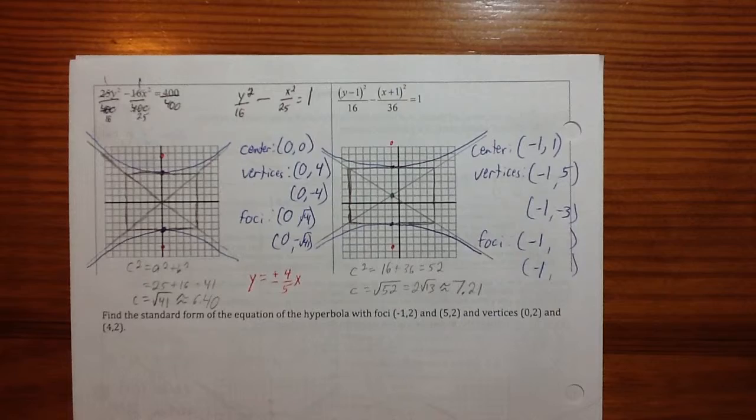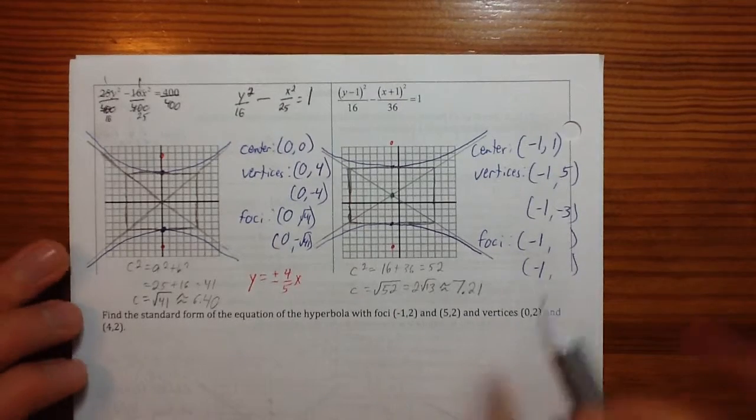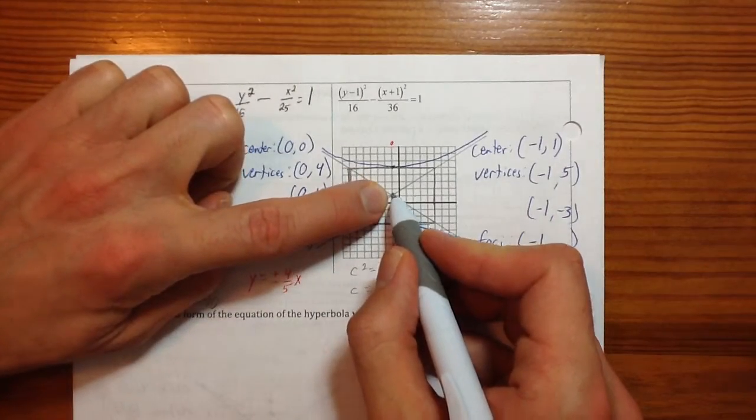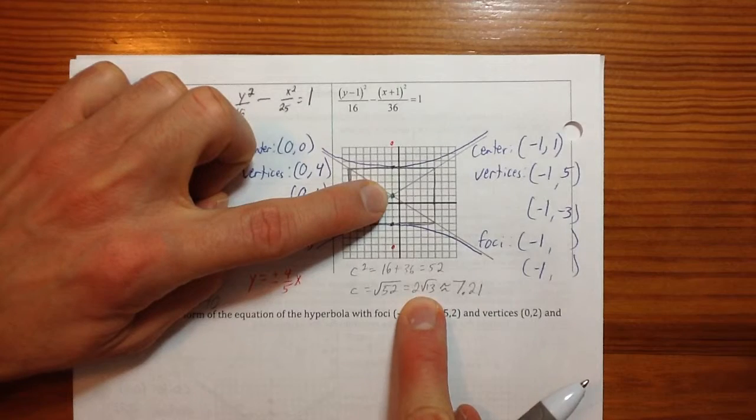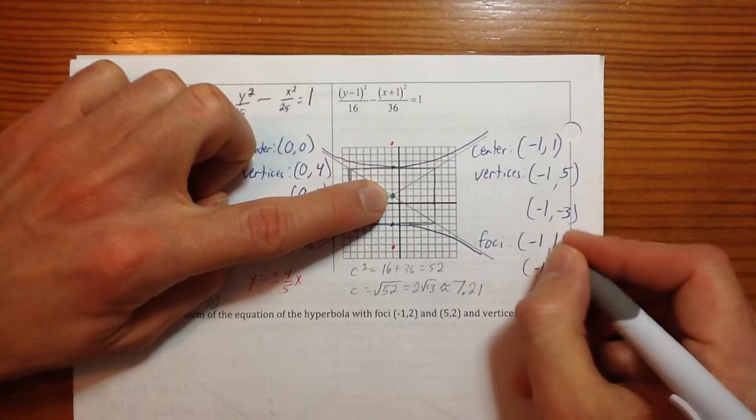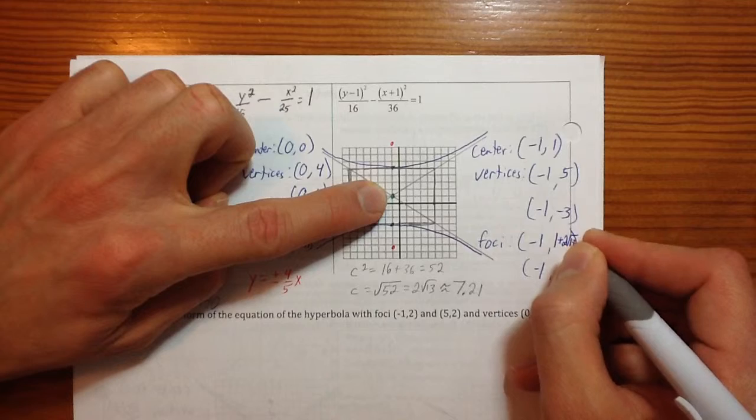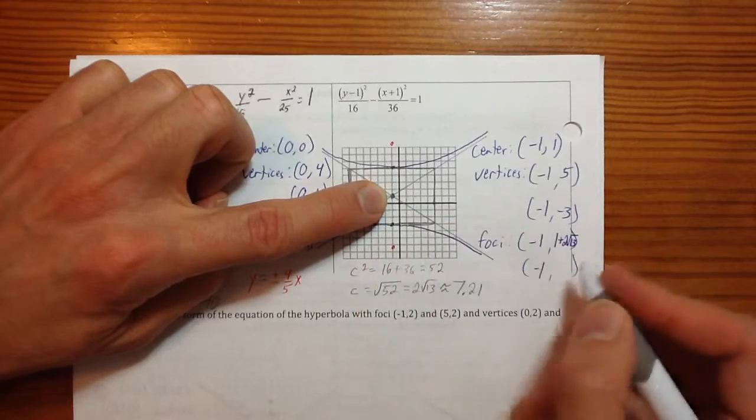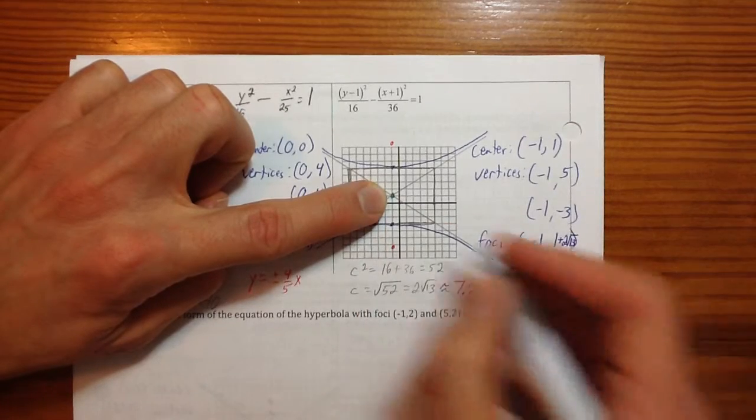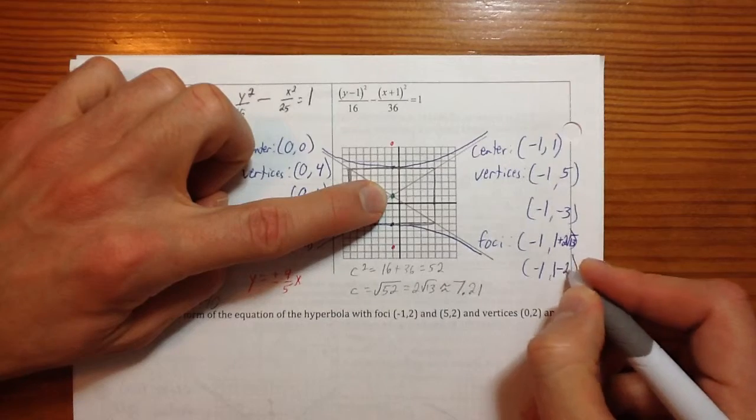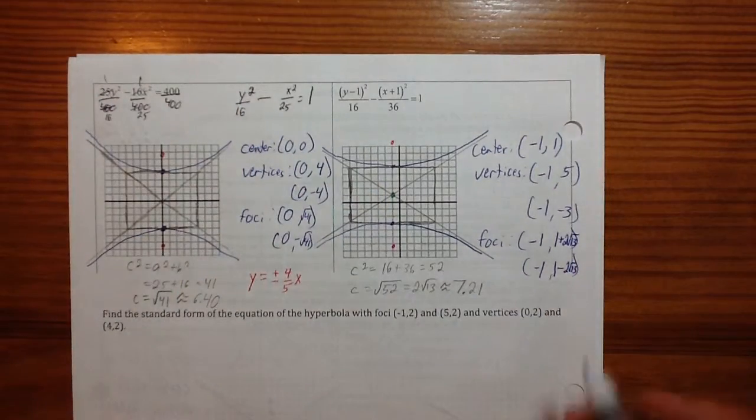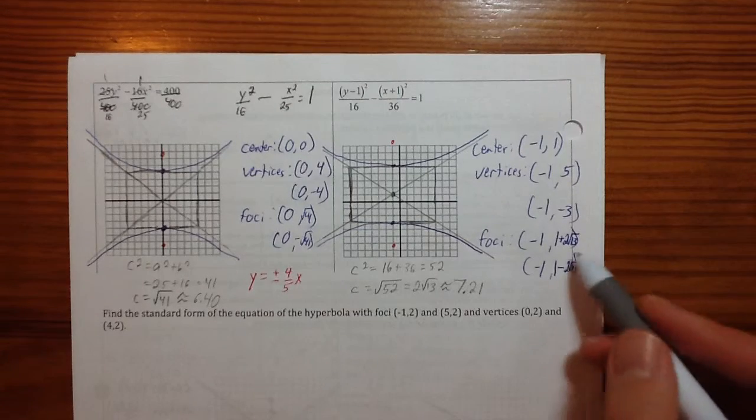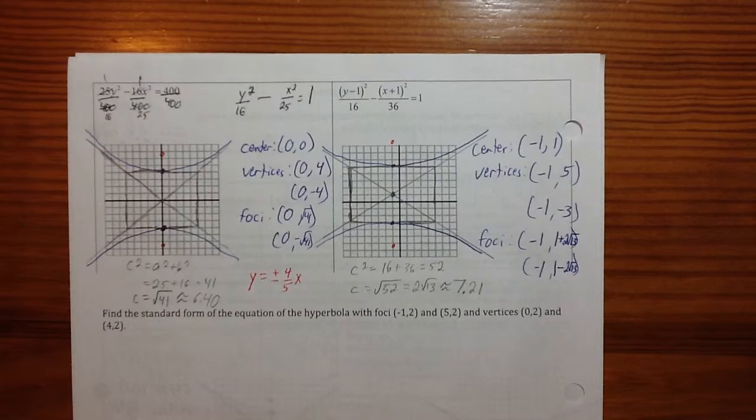I'm going to simplify things for us just a little bit. One of the foci is at (-1, 1 plus that amount). 1 plus 2√13. That's really hard to read. And the other one is at (-1, 1 minus that amount). 2√13. You could have treated that as a plus and a minus. Can I take decimals? Sure. This is easier though. Honest it is.